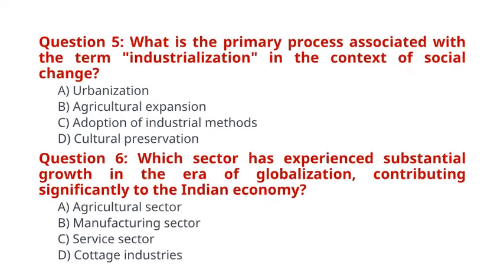Question 5. What is the primary process associated with the term industrialization in the context of social change? A. Urbanization. B. Agricultural expansion. C. Adoption of industrial methods. D. Cultural preservation. The correct answer for question 5 is option C: Adoption of industrial methods.